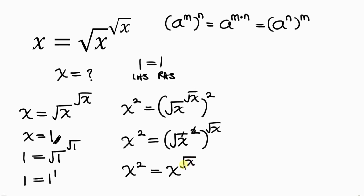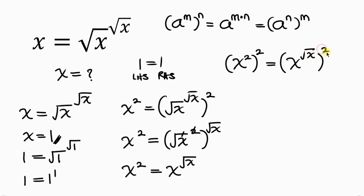Now we square both sides again. On the left, x squared squared gives x to the power of 4 — since 2 times 2 is 4. On the right, x to the power of the square root of x squared gives x to the power of 2 times the square root of x, which is x to the power of 2√x.